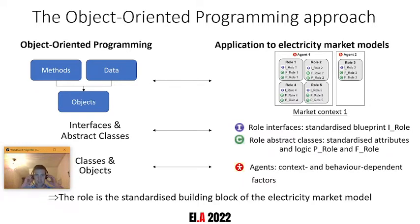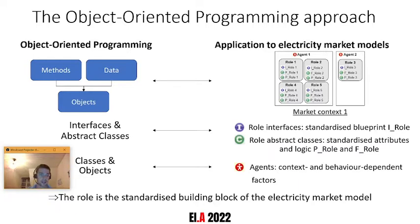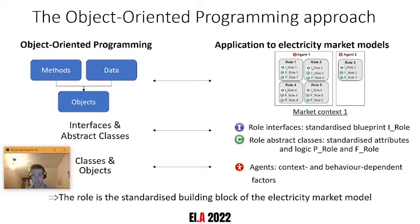These methods are then combined with data to instantiate objects which create context-specific applications. If we look at an electricity market, there are analogies we can draw — any electricity market is made up of certain roles: a consumer that buys electricity, a seller that sells electricity, and a market operator connecting the seller to the buyer. The question is then who is going to take up each of these roles, and that's where context specificity comes into play.